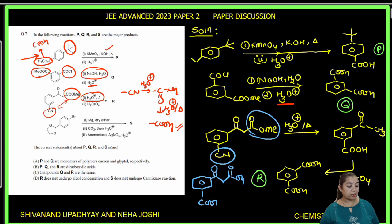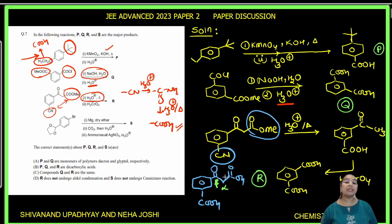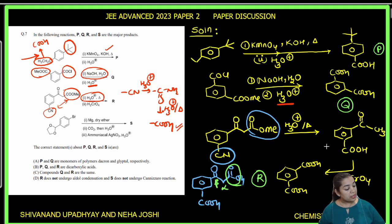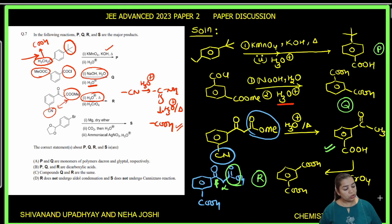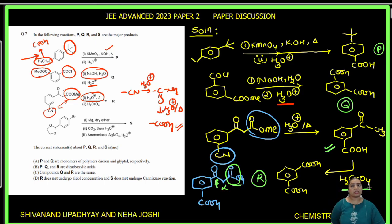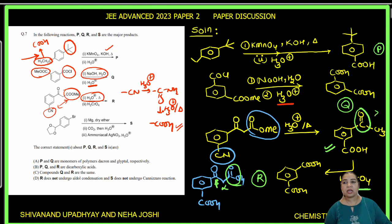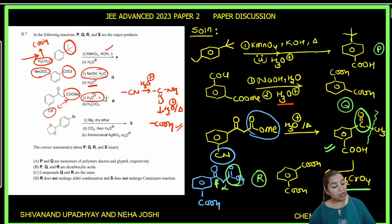The hydrolysis product looks different because of a beta-keto acid intermediate. With heat given, the beta-keto acid undergoes decarboxylation — CO2 is lost. So the ester center and cyanide center both hydrolyze, and after decarboxylation, further oxidation with H2CrO4 oxidizes any remaining alkyl group on benzene to COOH. Compound R also gives isophthalic acid — a dicarboxylic acid, same as Q.